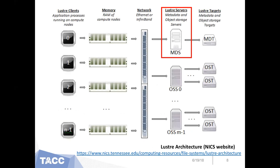Let us take a look at how we can make this happen, starting with the Lustre file system first. This picture shows the architecture of a Lustre file system. On the left are the compute nodes — the Lustre clients. On the right are the Lustre object storage services and object storage targets, OSS and OSTs, which manage the disks that finally keep your data files. One key component is the metadata server, or MDS, which receives all I/O requests from the client side and assigns the OSS and OSTs. Once there are too many I/O requests coming to the MDS, the MDS will become slow and sometimes even crash.